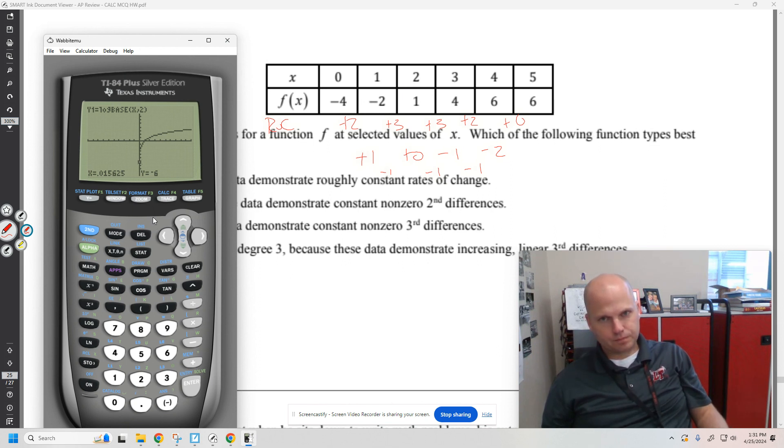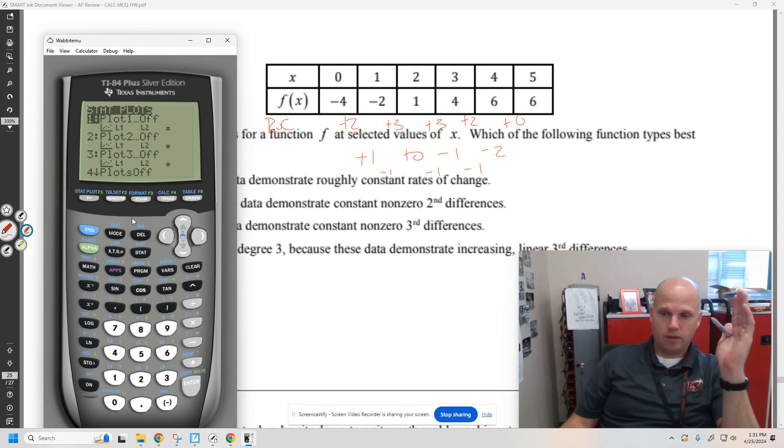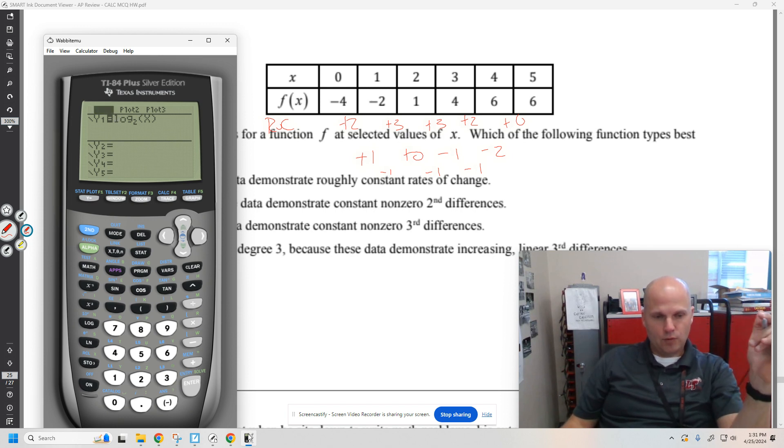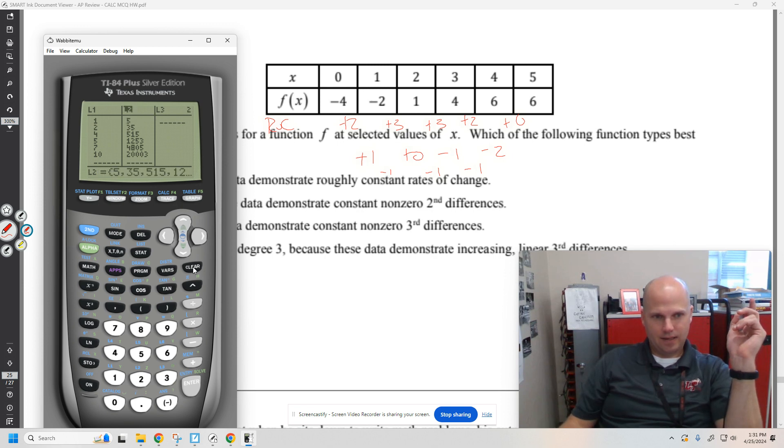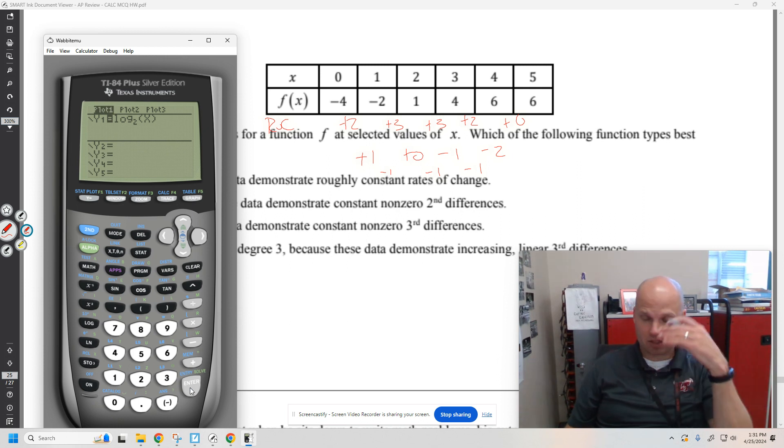You could have stat edited, plotted data, view it, turn your stat plots on. Here's one thing, guys, really quickly. If you're actually paying attention to this, if you have your stats plot on and you don't have anything in stat edit, let's say you reset your calculator. First of all, if you reset your calculator, your plots are going to be off. So if you use stat edit, you need to put your stat plot on to see your data.